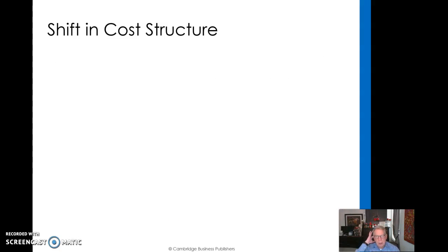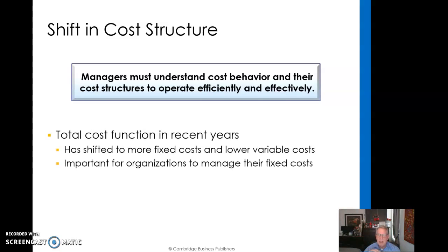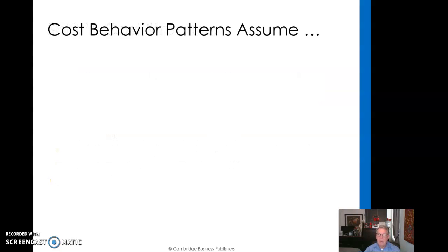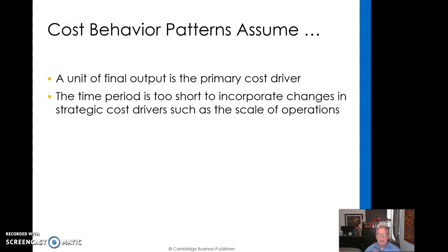Managers have to understand how cost behavior works, and there are cost structures to operate efficiently and effectively. The total cost function in recent years has shifted more to fixed costs and less to variable costs, because as we automate, we're putting in more fixed costs. It's important for our organizations to manage those fixed costs. A unit of output is the primary driver, and a time period is too short to incorporate changes in strategic cost drivers such as the scale of operations.